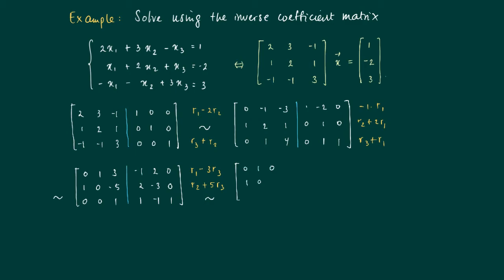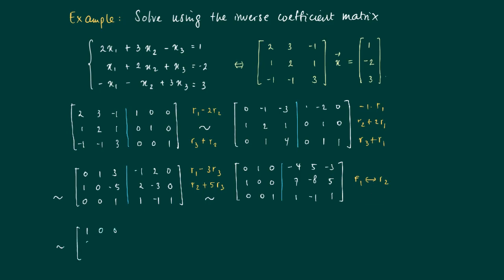We now obtain a matrix with 3 pivots. The right-hand side reads: −4, 5, −3, 7, −8, 5, 1, −1, 1. To reach reduced row echelon form, we interchange row 1 and row 2, after which the identity matrix appears on the left of the blue line. We then have 3 pivots and the process is complete.